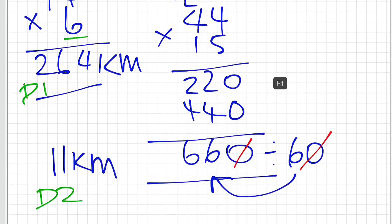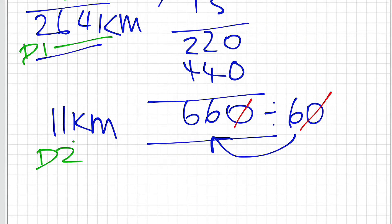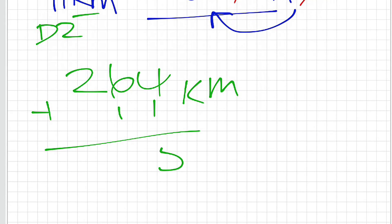Now we need to add the two together. We've got 264 plus 11, all in kilometres. We've got 5, 7, and 2. That is the answer to the first question: the distance in total is equal to 275 kilometres.